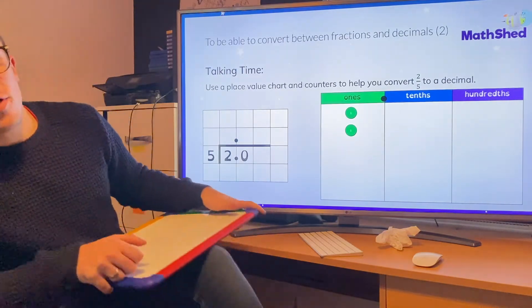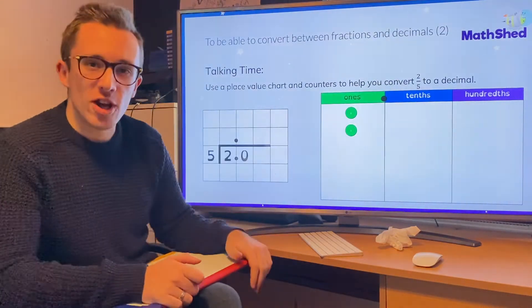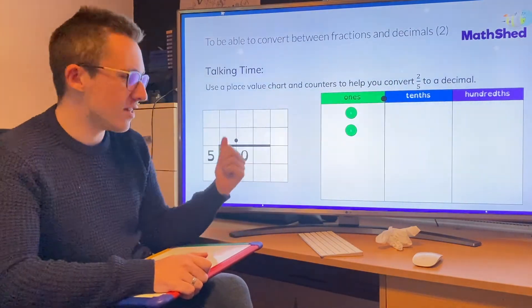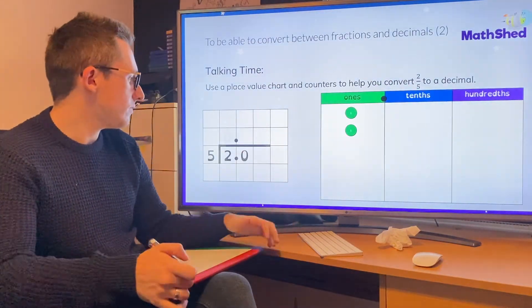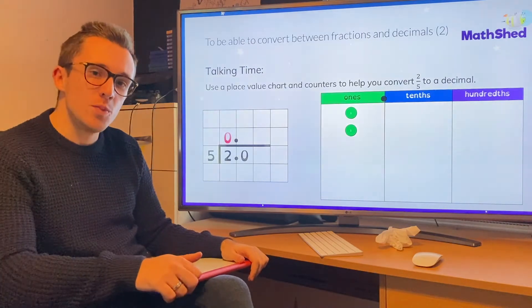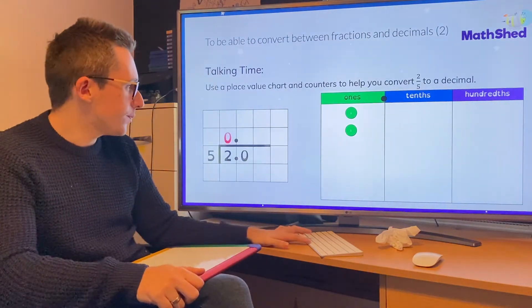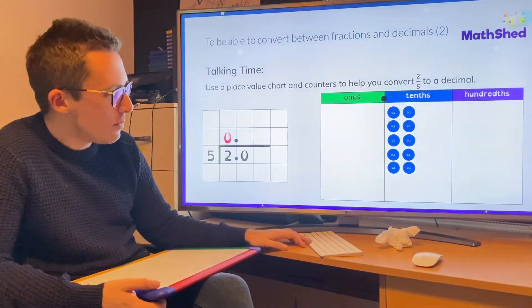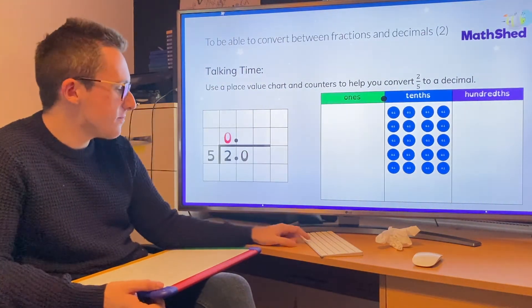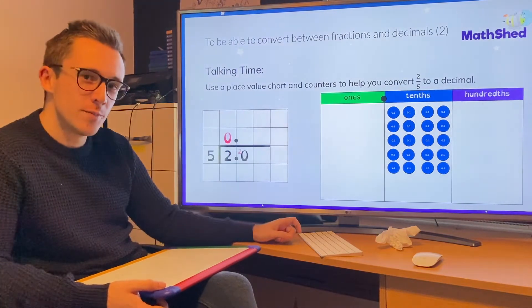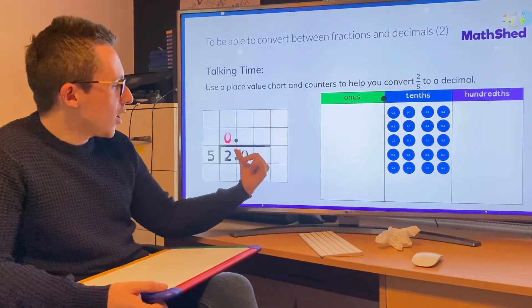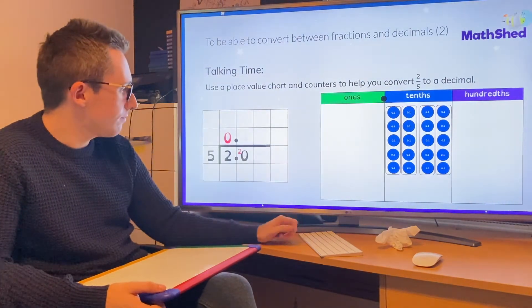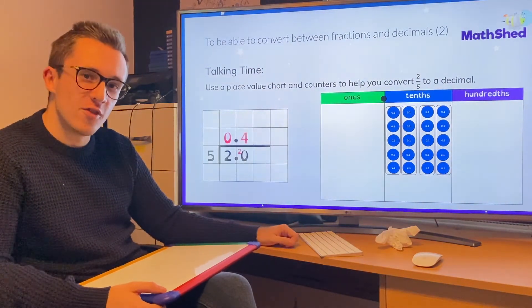We can do it with a fraction that has a bigger numerator. It doesn't really matter. We do the exact same thing. Denominator outside, numerator inside. Five goes into two. Well, it doesn't, so we put a zero. We take those whole ones and we turn them into tenths, like you can see here, and we carry it over. Five goes into twenty four times. So the answer is 0.4.